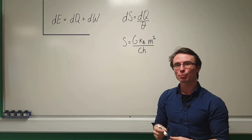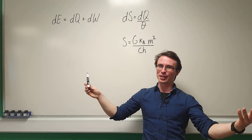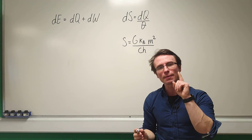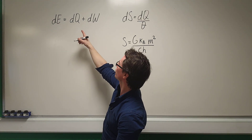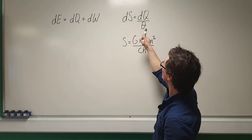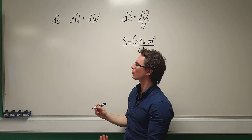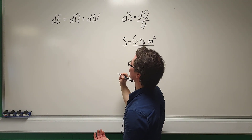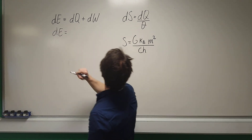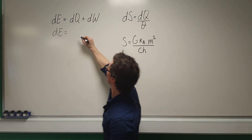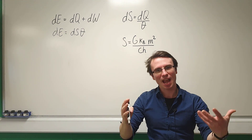What I'm going to do is use the first principle of thermodynamics together with the definition of entropy, and of course E = mc², to actually find the Hawking temperature. We know that DE = DQ + DW. The definition of entropy tells us that DS = DQ/θ, so rearranging, DQ = DS·θ, where θ is the temperature.